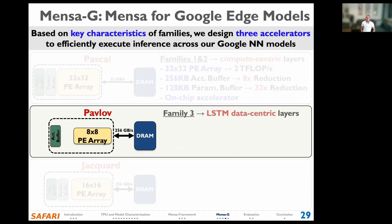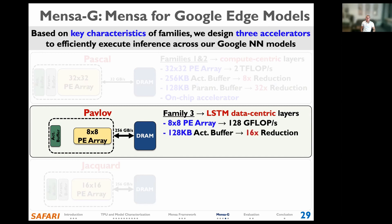Pavlov caters to layers in family three, which are data-centric and mainly consist of LSTM layers. Because family three layers have low MAC intensity and mainly perform matrix-vector multiplications, we designed a much smaller 8x8 processing element array. Due to the small activation footprint, we use a 128 KB buffer for activations, while our dataflow design for Pavlov eliminates the parameter buffer and streams parameters directly from DRAM. We place Pavlov inside the memory device to accommodate the large off-chip memory bandwidth requirement of family three layers.